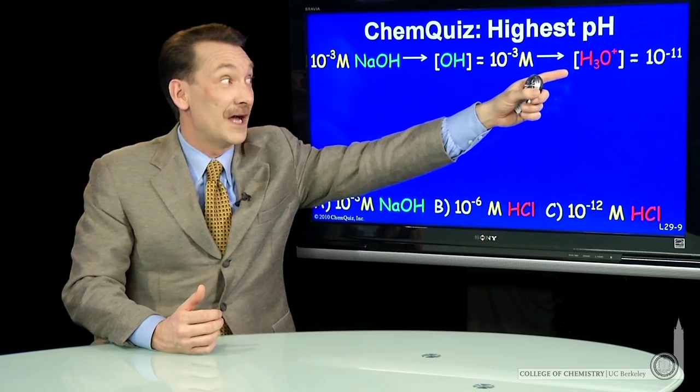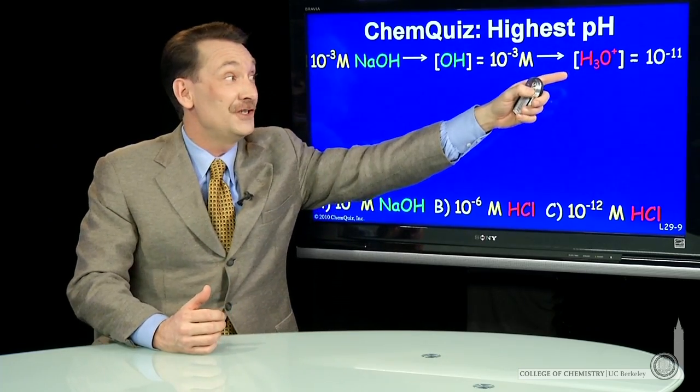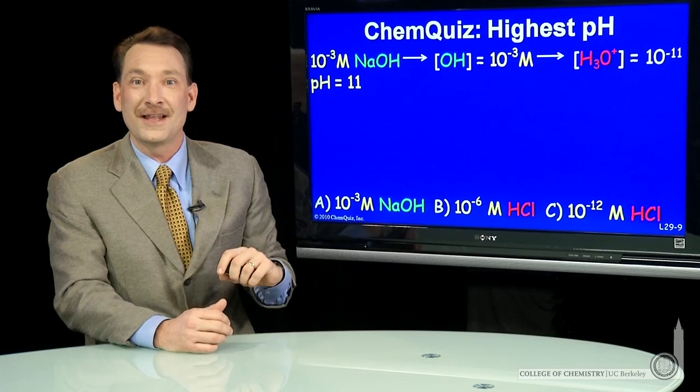H3O plus must be 10 to the minus 11. And now I can easily calculate the pH. The pH is minus log of 10 to the minus 11. That's 11.